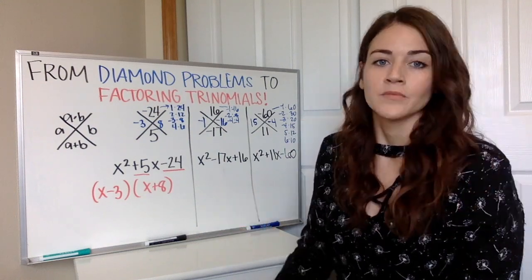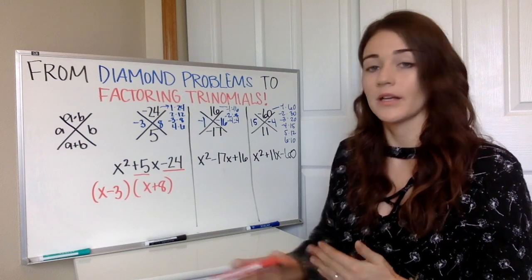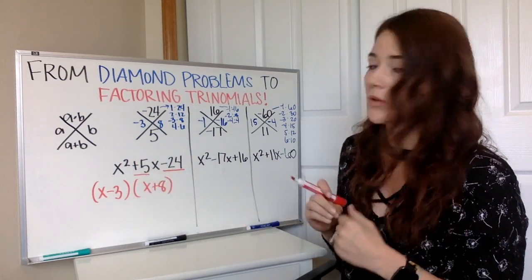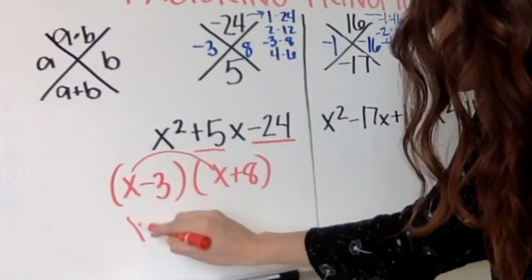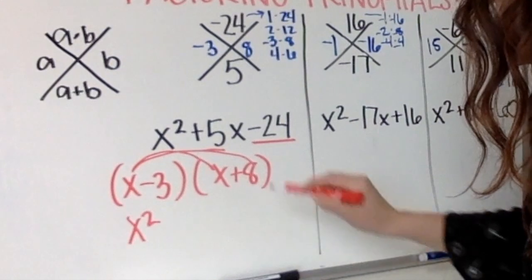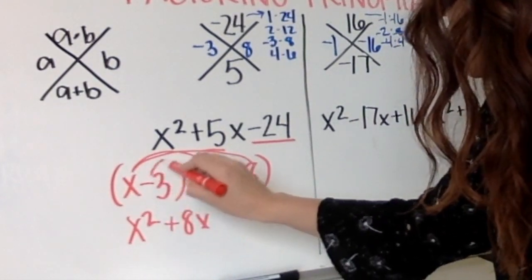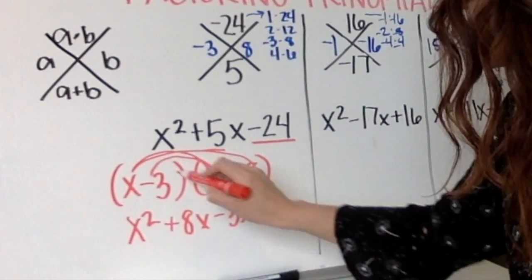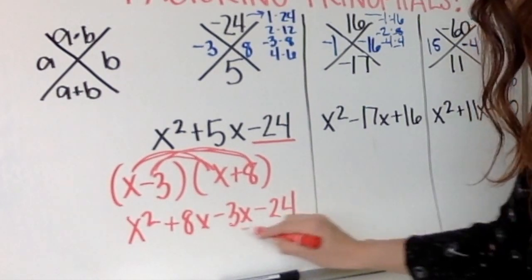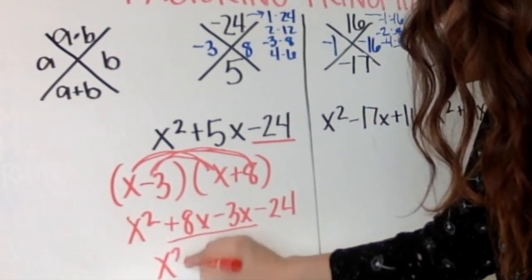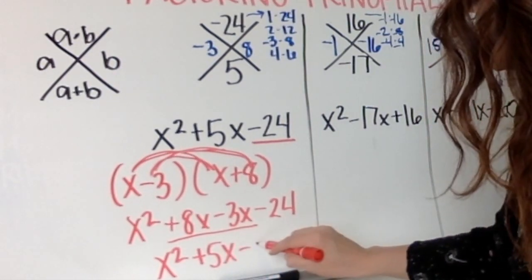You have now factored your trinomial. A lot of times you're going to want to check your answer, so if you were to again go backwards and see if you've got this answer and we're to distribute: x times x is x squared, x times 8 is 8x, negative 3 times x is negative 3x, negative 3 times 8 is negative 24. If I combine my like terms I get x squared plus 5x minus 24. We got our original so we know we factored it correctly.